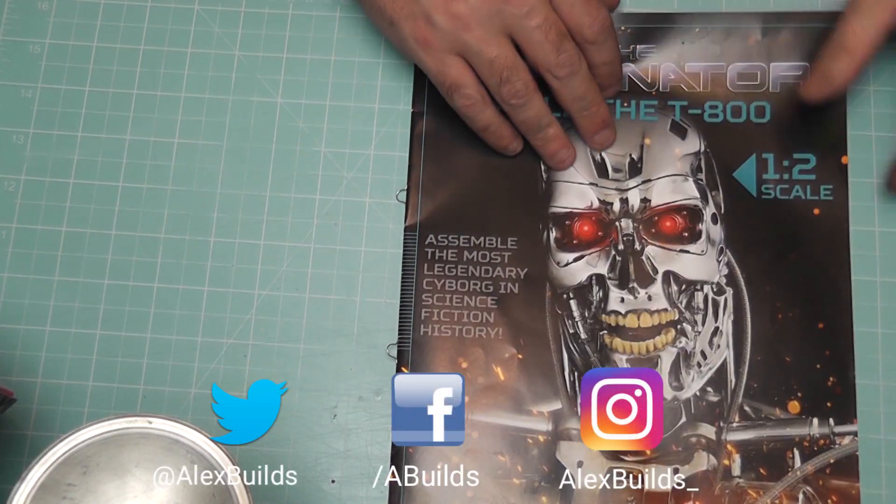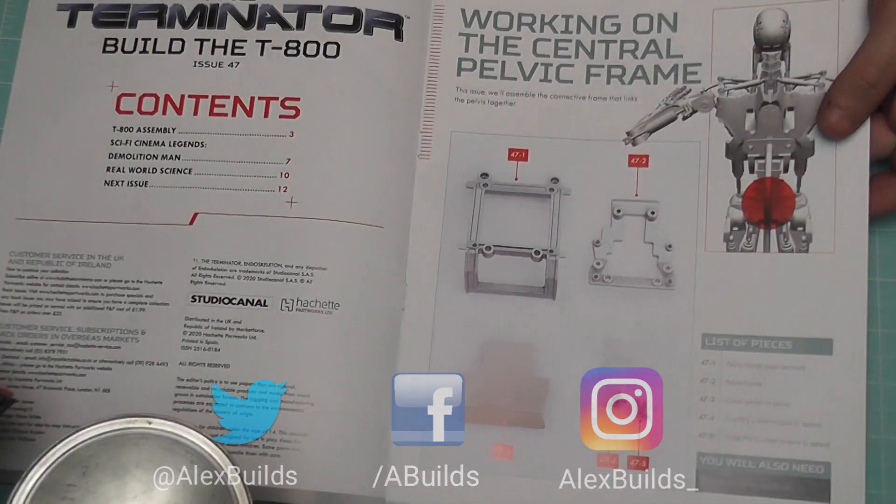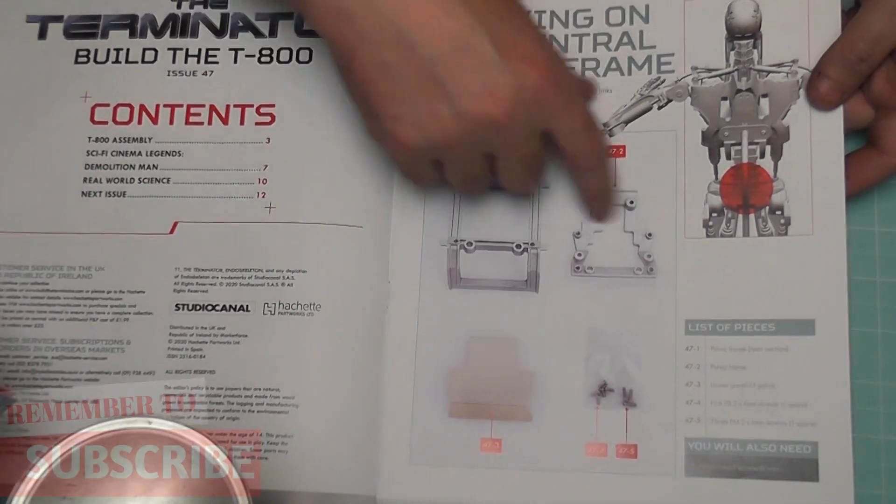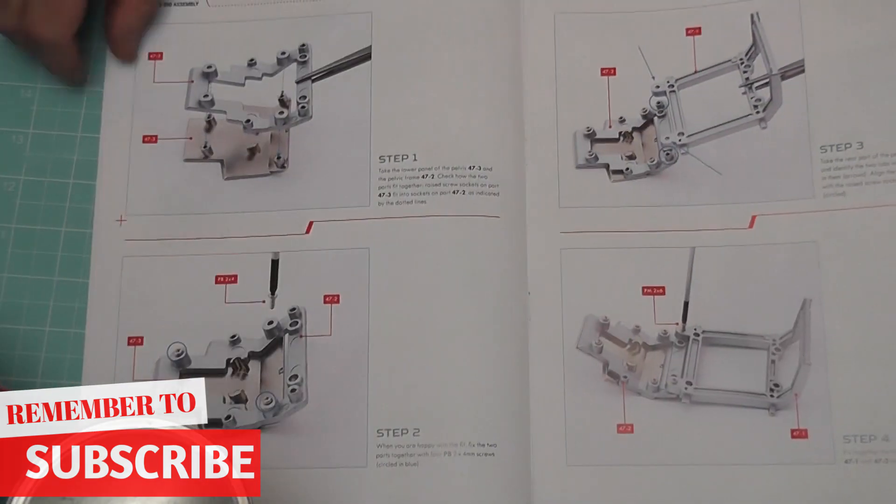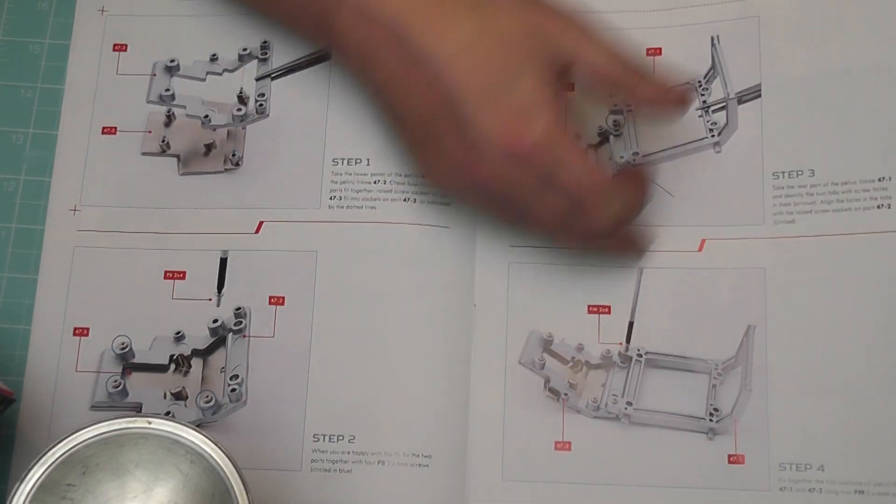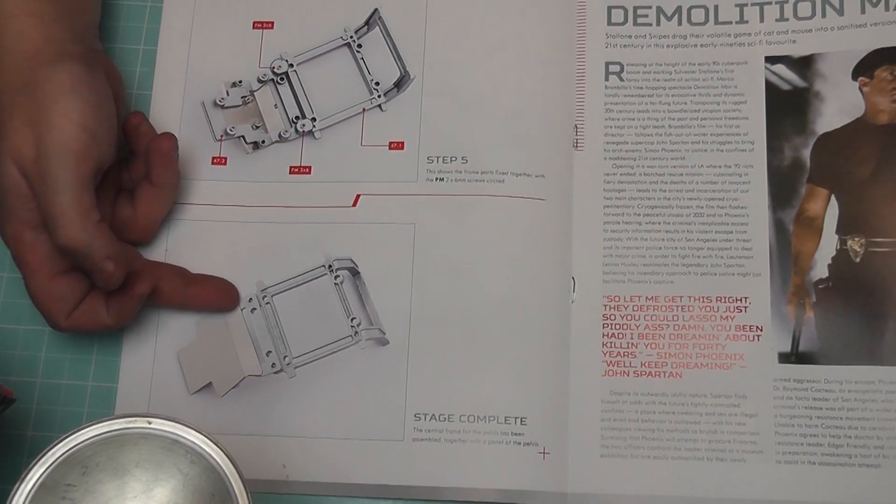So let's take a look at what we've got to do. To be honest with you, there's not too much to do. These are the parts we get. We get two different types of screws. There's not too much to do. Basically we're just attaching these three plates together until we end up with something that looks a little like that.